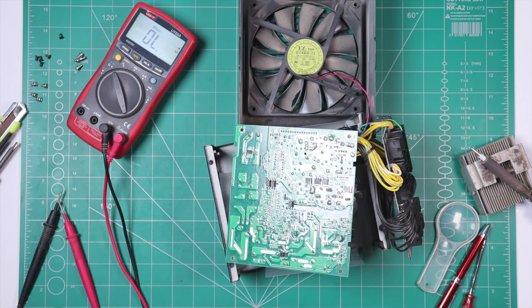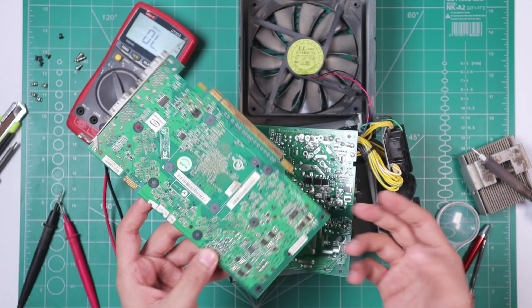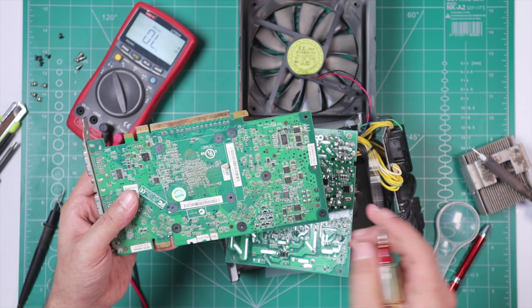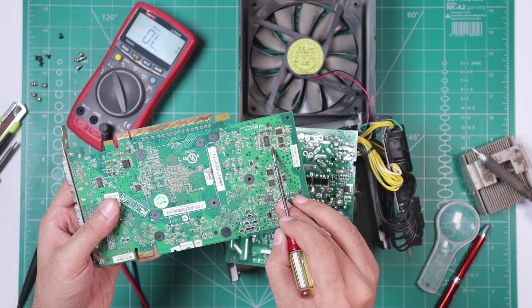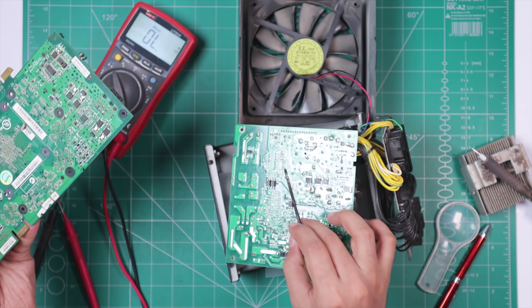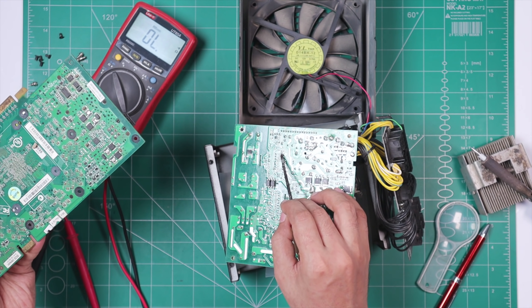Now finding SMD components or SMD resistors can be quite difficult here, but fortunately I actually found a 10 ohm resistor on an old NVIDIA Quadro GPU. So I'm going to desolder it from this GPU, and then we'll solder it in place of that blown up resistor.